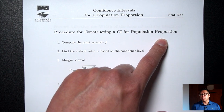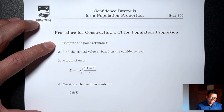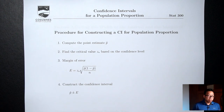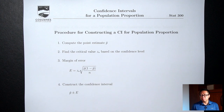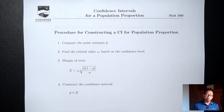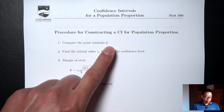Step one: compute the point estimate p-hat. As is often the case in statistics, you can't get data from everybody in the population — there's just too many people. In the article, they didn't ask all Americans; that would be millions and millions of people. Instead, they took a sample of 802 people and got their proportion from the sample. That's the p-hat. So in the article, that 53% is the p-hat.